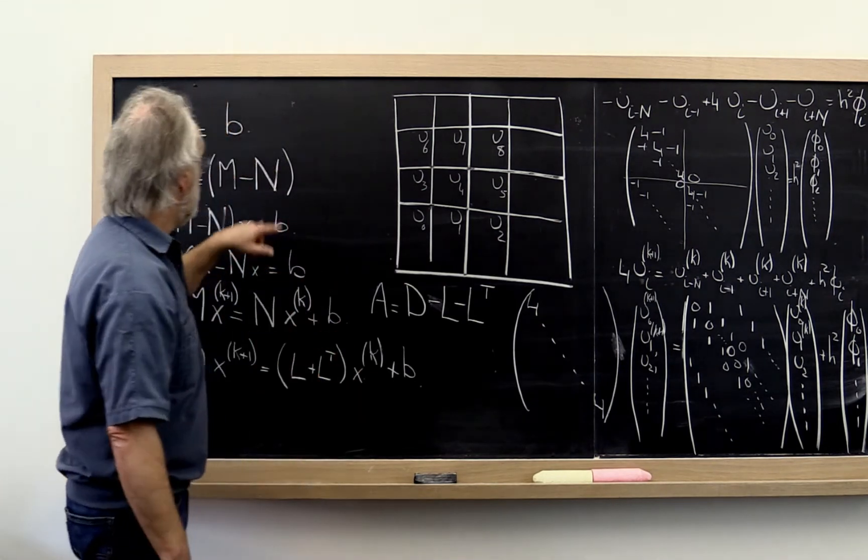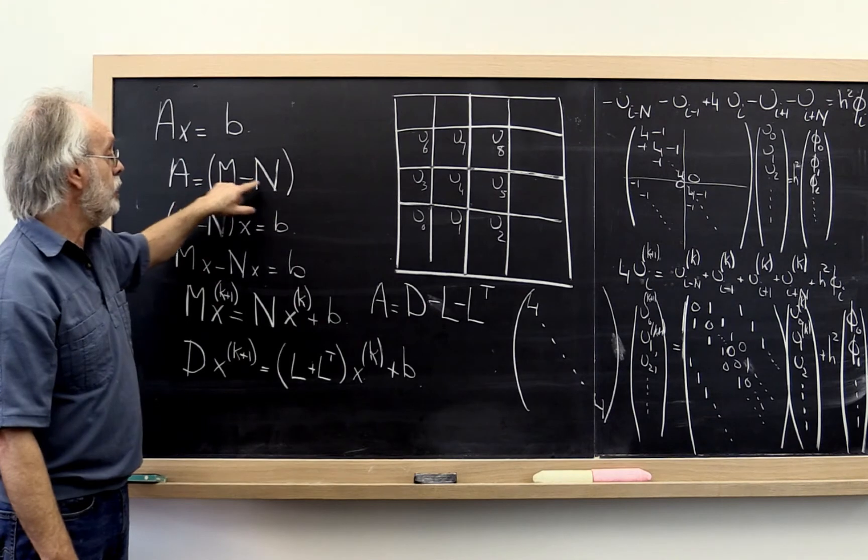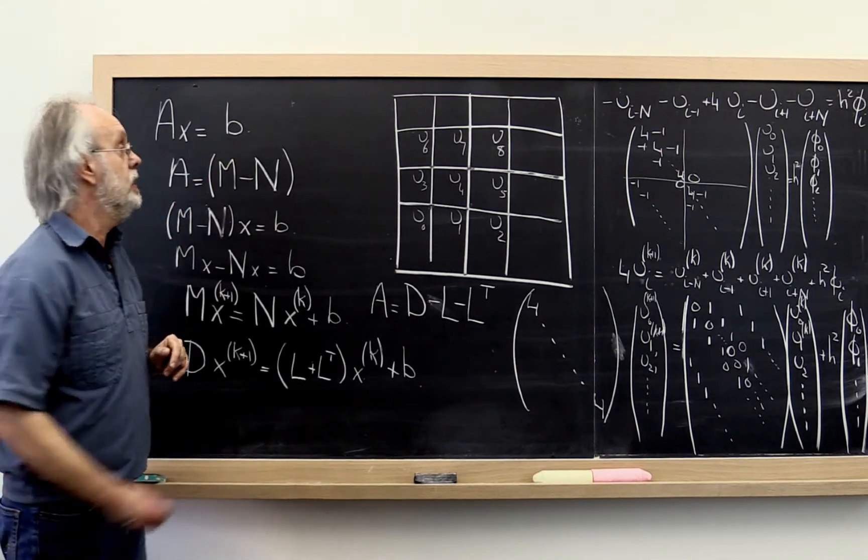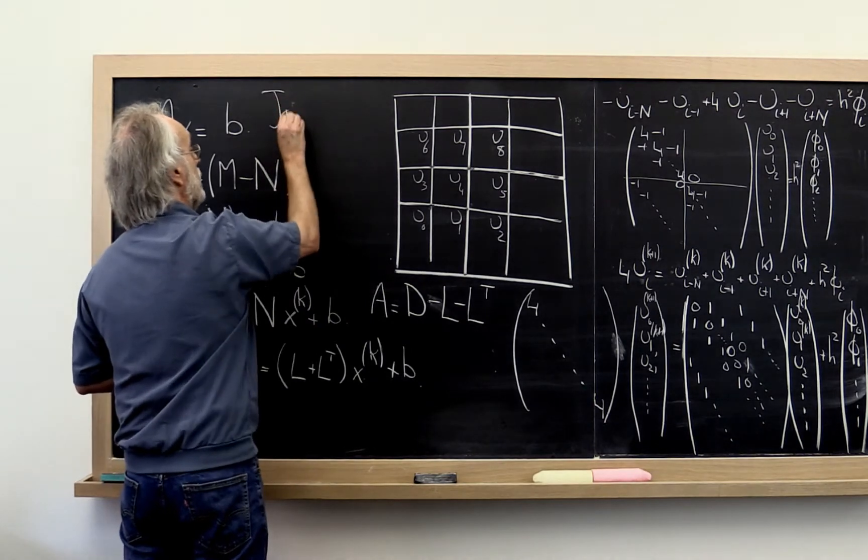And this method where you split it so that M is the diagonal and N is everything else, well, the negative of everything else, is known as the Jacobi iteration.